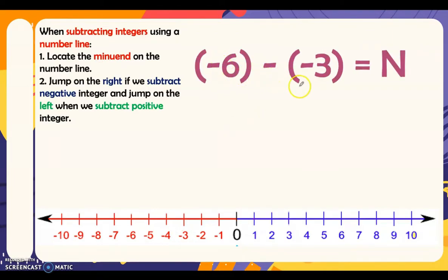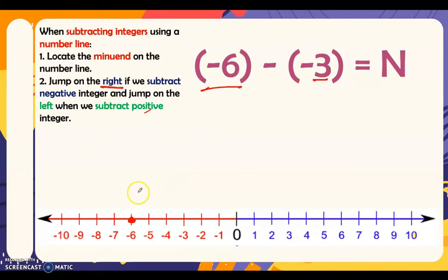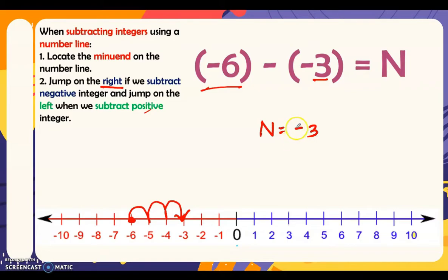Next: negative 6 minus negative 3 is equal to n. Let's locate negative 6 as our minuend. We subtract negative 3, and if we subtract a negative integer we move or jump to the right. So we move 1, 2, 3 steps to the right and end up at negative 3. Therefore, negative 6 minus negative 3 is equal to negative 3.